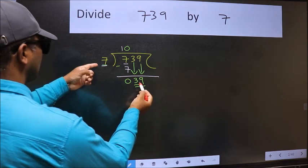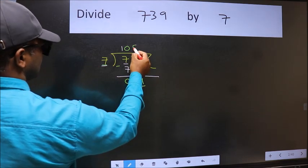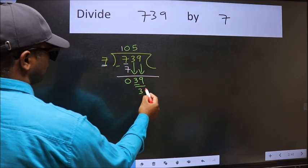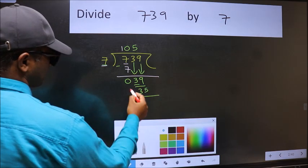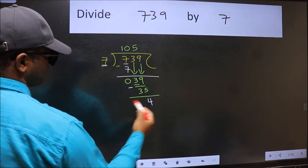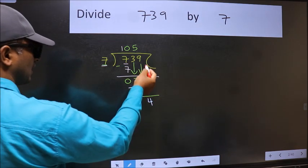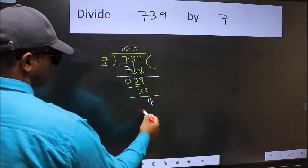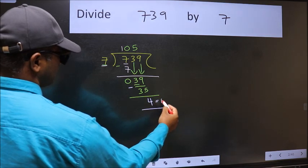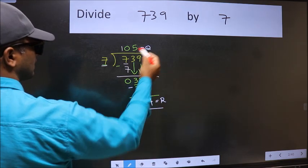A number close to 39 in the 7 table is 7 fives, 35. Now we should subtract. We get 4. No more numbers to bring it down, so we stop here. This is our remainder and this is our quotient.